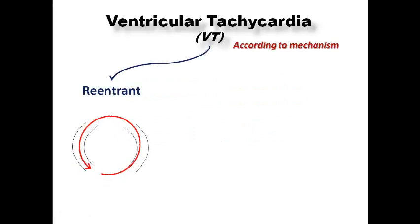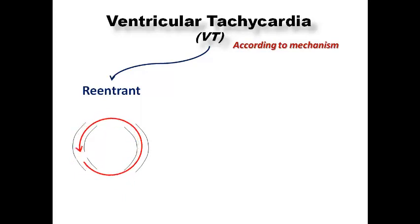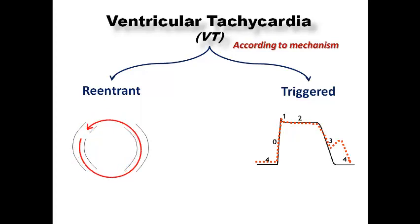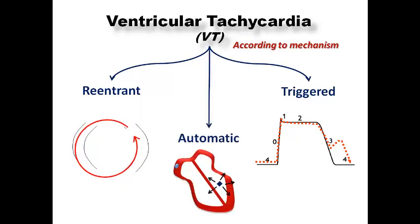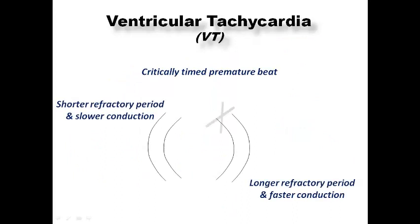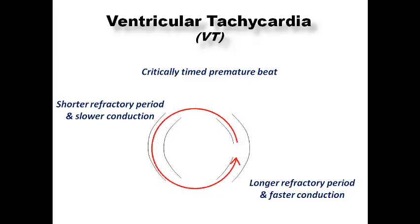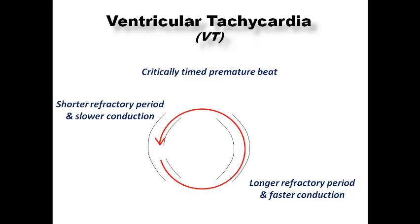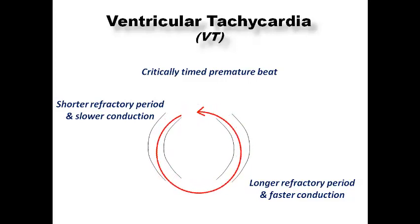Now let's classify VT according to mechanism. There are three basic mechanisms for any tachyarrhythmia, applied also in VT. Re-entry requires an obstacle in the center and two pathways with differences in conduction velocity and refractory periods. One pathway has a shorter refractory period and slower conduction; the other has a longer refractory period and faster conduction. A critically timed premature beat is blocked in one pathway and passes antegradely in the other, then retrogradely in the blocked pathway — this is the basic mechanism of re-entrant tachycardia.